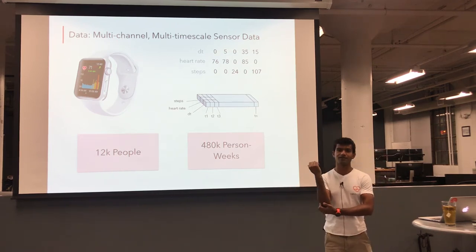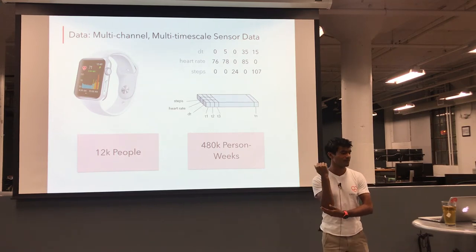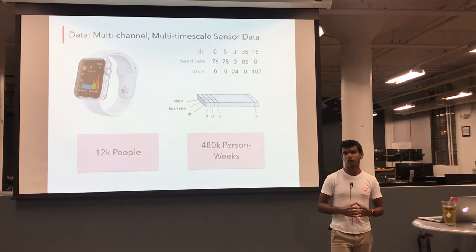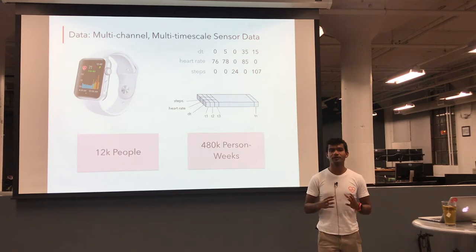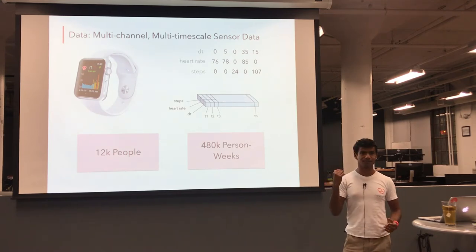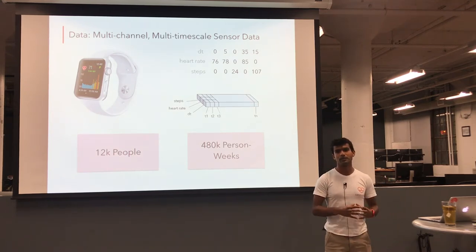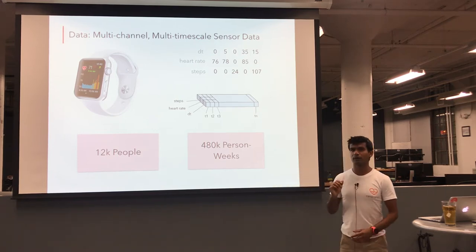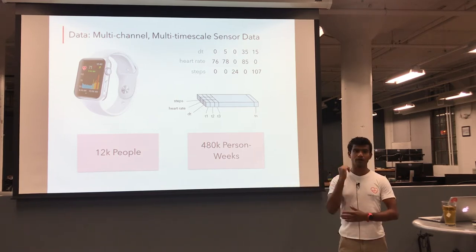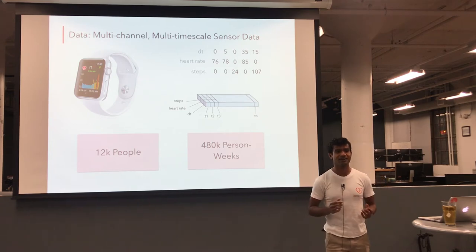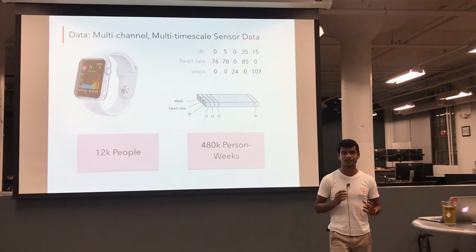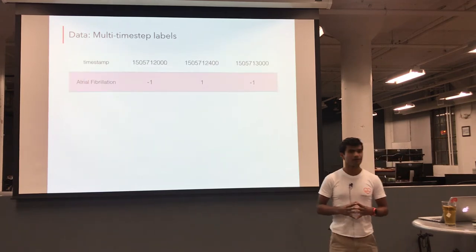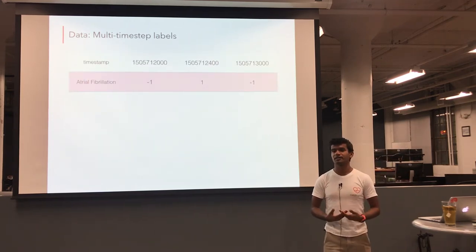For heart rate measurements, we get them every five minutes or five seconds, depending on whether the user is working out right now. So for that reason, our input data includes three different channels: the heart rate, the step count, and your delta in time, the time since the previous measurement. And we encode all this into a NumPy array and use that to train using TensorFlow. So in terms of the scale of data we have, we have 12,000 people who we have labels for. The important thing here is labels, because we have 200,000 monthly active users. But most of these people, we don't know what diseases they have.